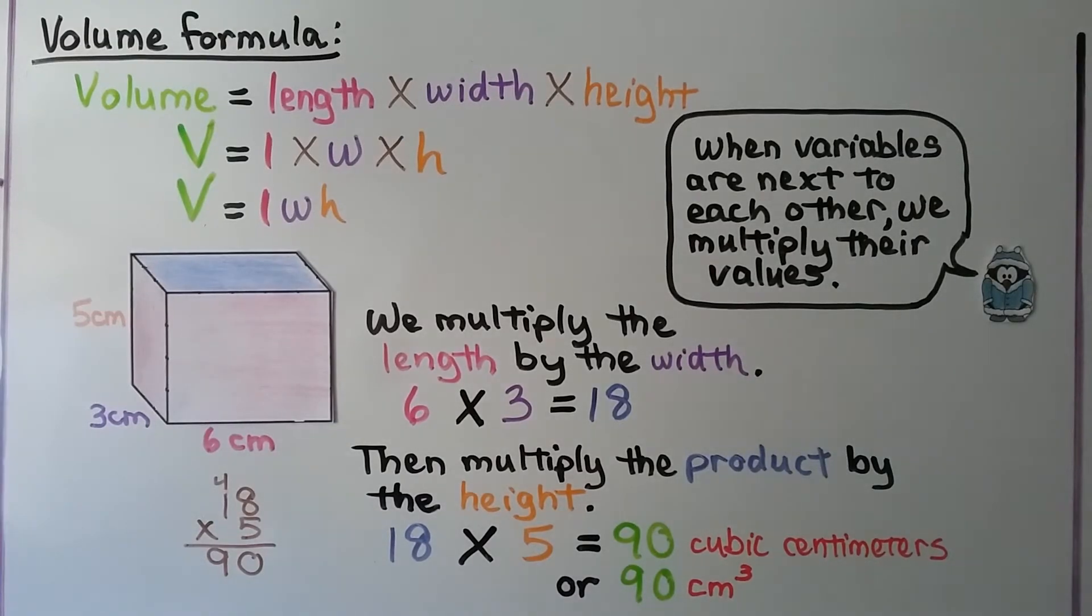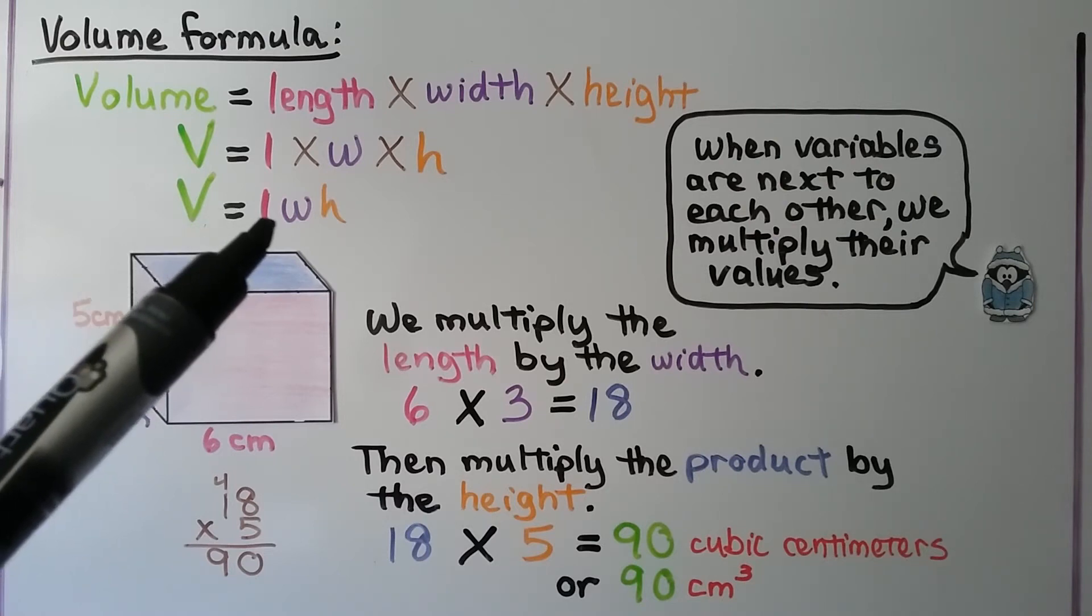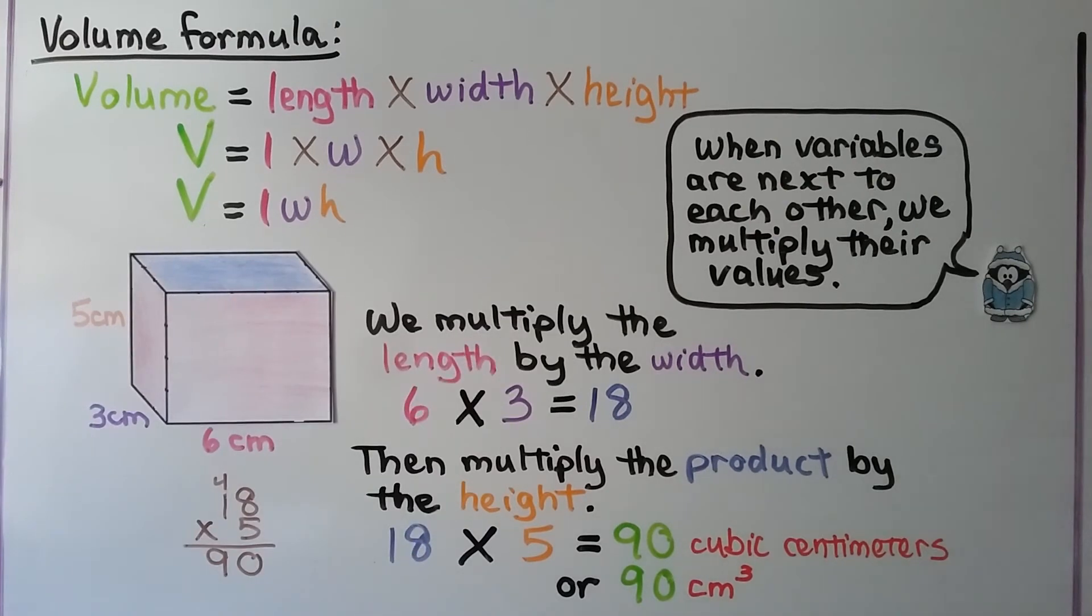Using this volume formula, volume equals length times width times height, we can write it as V equals L times W times H. We can also write it just as V equals LWH, because when variables are next to each other, we multiply their values.